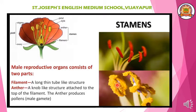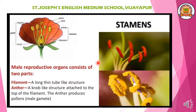Anther and filament are the male reproductive part of a flower. The male reproductive part produces a yellow colored powdery substance called pollen or pollen grains. This is about the male reproductive part of a flower.